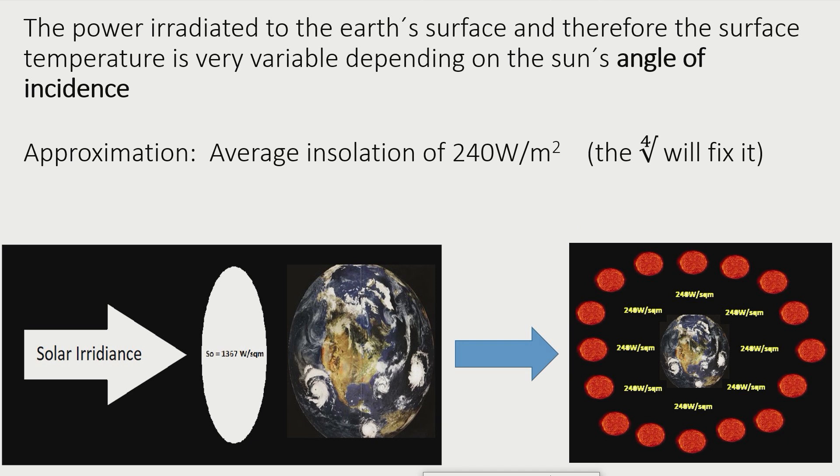The power radiated to the Earth's surface, and therefore the surface temperature, is very variable depending on the sun's angle of incidence. This makes the application of the Stefan-Boltzmann law difficult, since it is only applicable for bodies with a constant surface temperature. This problem was dealt with by averaging out the solar radiation equally over the surface of the Earth. An excuse for this abuse of the Stefan-Boltzmann law might be that the fast rotation of the Earth in combination with the fourth root in equation will keep the error small.